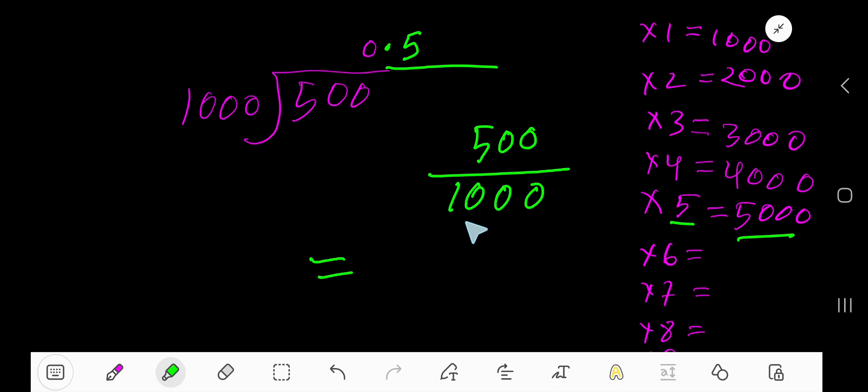Write the numerator, and then count the number of zeros in the denominator: one, two, three. So move the decimal point three digits from right to left.